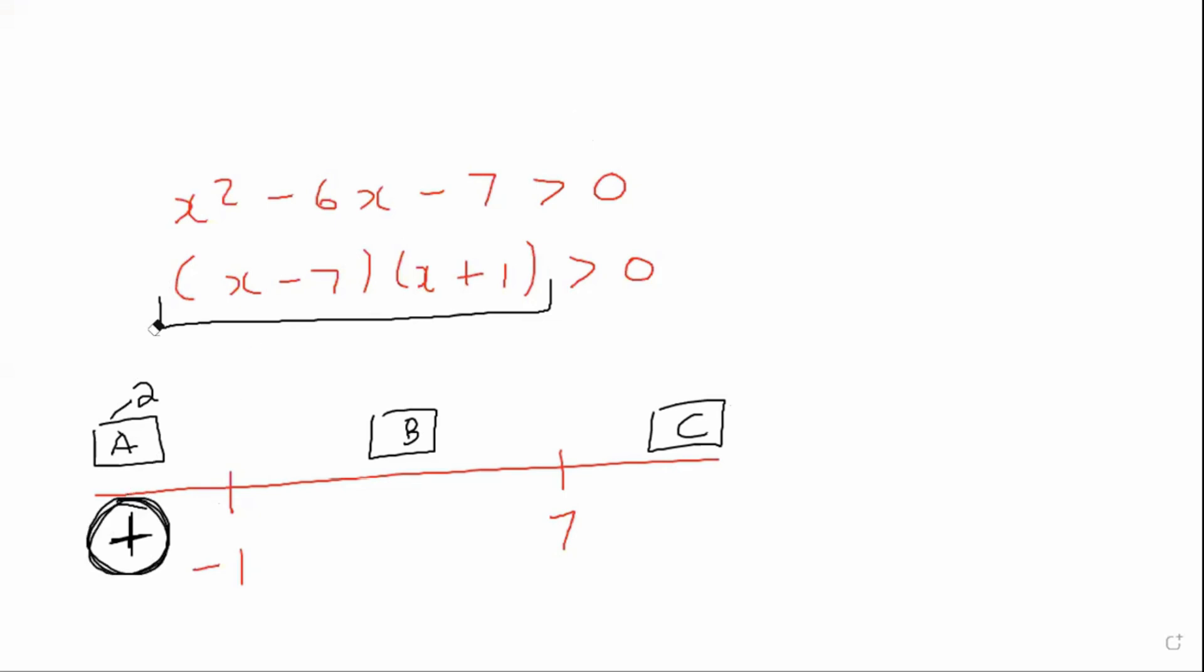Then you move on to the next interval, which is interval number B. So you choose any number between here, any number you like. I'm going to choose 0. Then you plug 0 into the x and the x and you multiply these two together and you see what you get. Either you get a negative or you get a positive. And so this one will give us a negative.